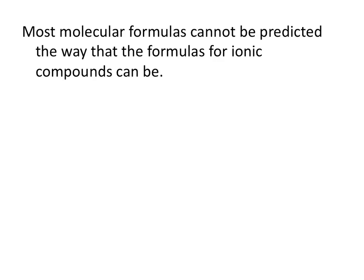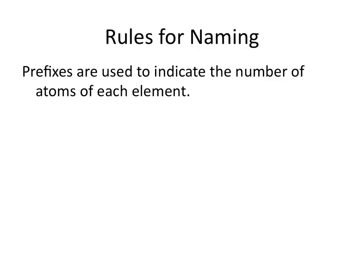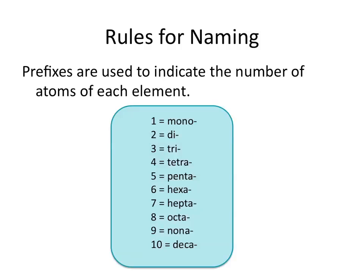Most molecular formulas cannot be predicted the way that formulas for ionic compounds can be. So here are our rules for naming molecular compounds. Prefixes are used to indicate the number of atoms of each element in the compound. Here's a list of the prefixes used. Most of these are common prefixes, but some may require some memorization.